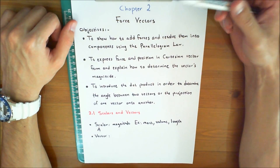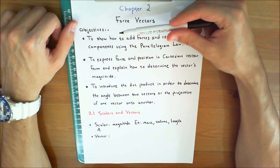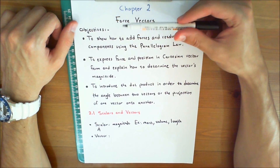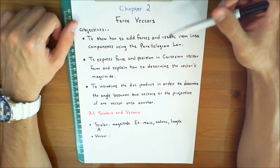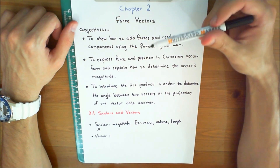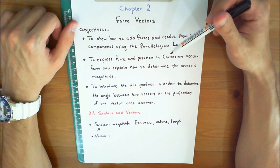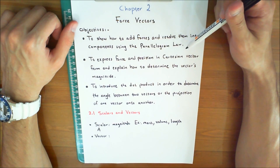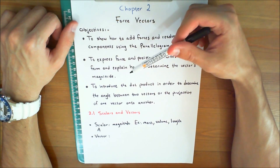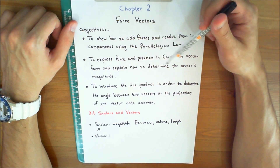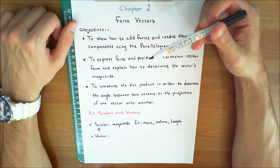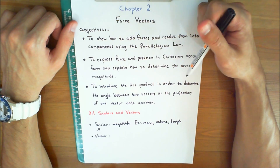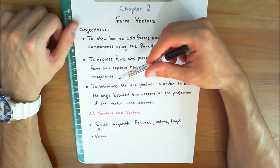Chapter 2: Force Vectors. The following are the objectives of this chapter: to show how to add forces and resolve them into components using the parallelogram law, and to express force and position in Cartesian vector form and explain how to determine the vector's magnitude.